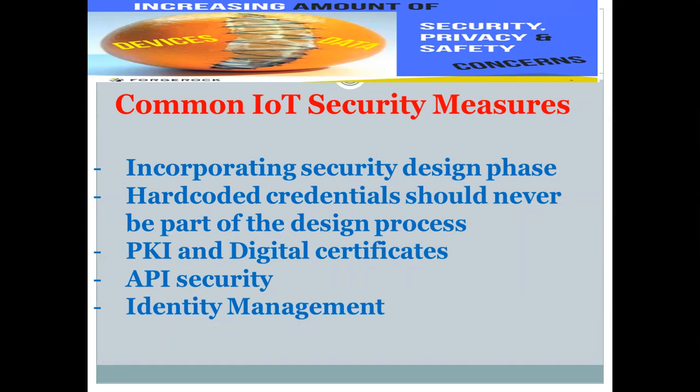PKI and digital certificates: Public key infrastructure, or PKI, and X.509 digital certificates play critical roles in the development of secure IoT devices, providing the trust and controls needed to distribute and identify public encryption keys, secure data exchanges over networks, and verify identity. API security: Application programming interface, or API, security is essential to protect the integrity of data being sent from IoT devices to back-end systems and ensure only authorized devices, developers, and apps communicate with APIs.